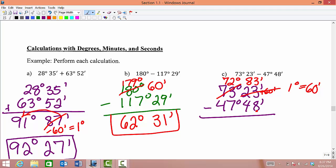Now 83 minutes minus 48 gives us 35 minutes, and 72 minus 47 would be 25 degrees. So 25 degrees and 35 minutes.